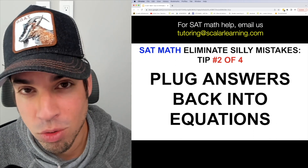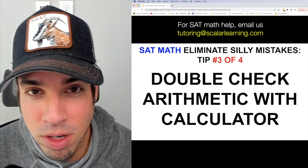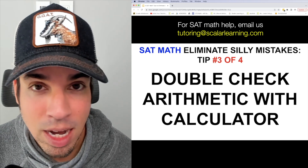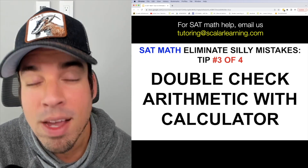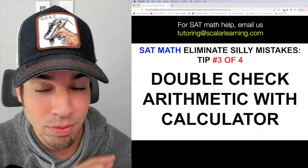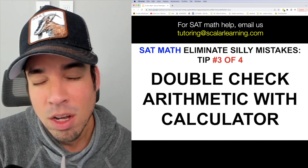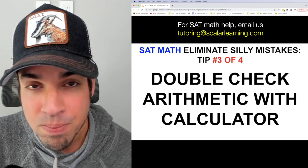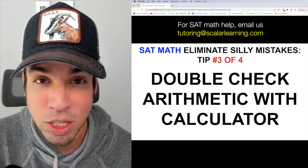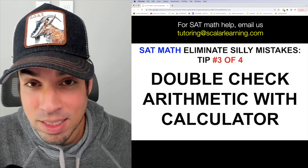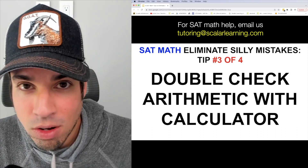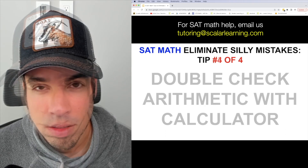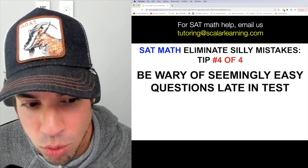Tip number three: double-check arithmetic with your calculator. This applies to the calculator section, and I recommend the TI-84 if you can get one. Double and triple-check that arithmetic — this is especially true on the free response. In multiple choice, if your answer doesn't match any choices, you know to redo it. On free response it's not so clear-cut. If you're entering a large set of numbers, say to calculate a mean, look back at the list after entering them and verify you haven't made any input errors before hitting enter.